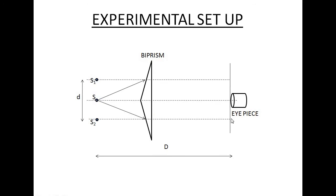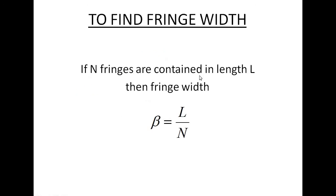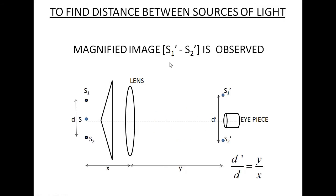In order to find the fringe width, we move the eyepiece and count the number of fringes that cross the field of view through a particular distance. If N fringes cross the field of view in a length L, then the width of each fringe can be calculated as β = L / N.